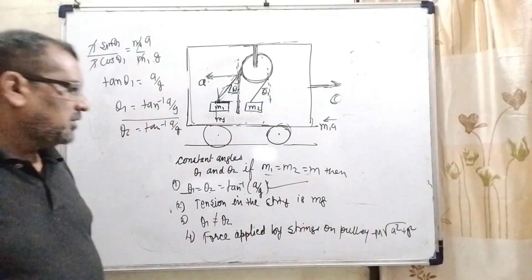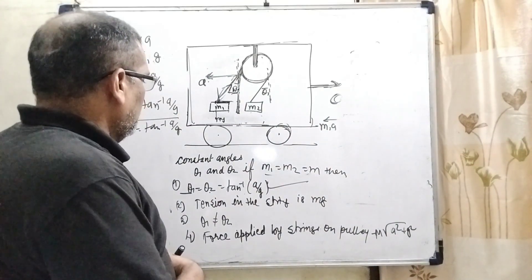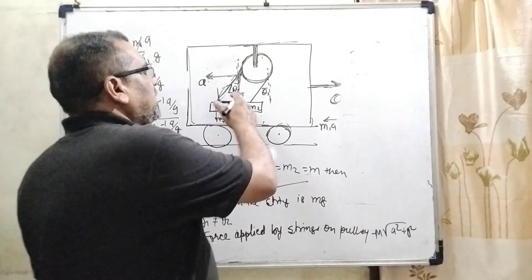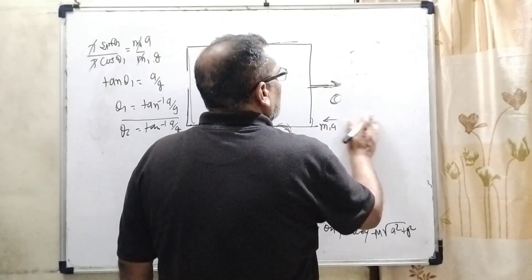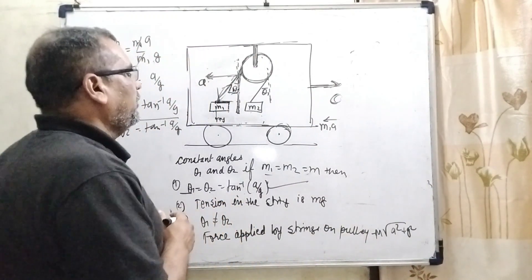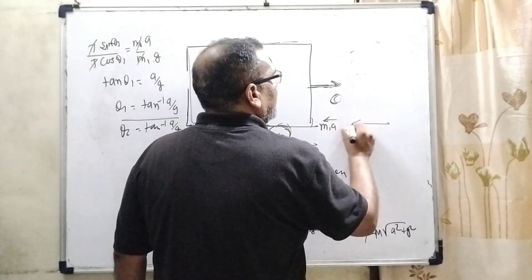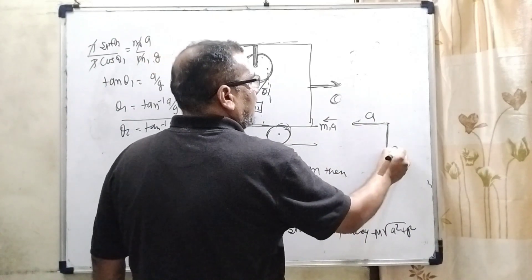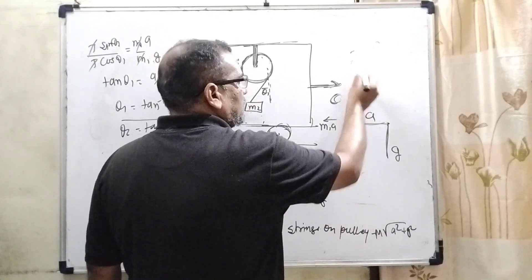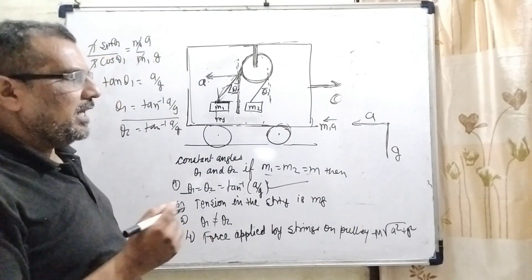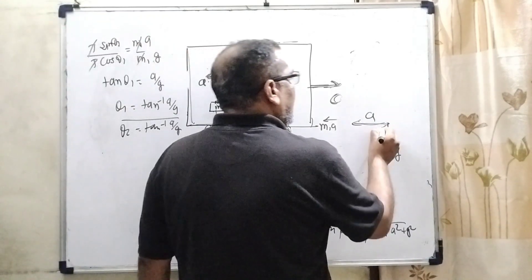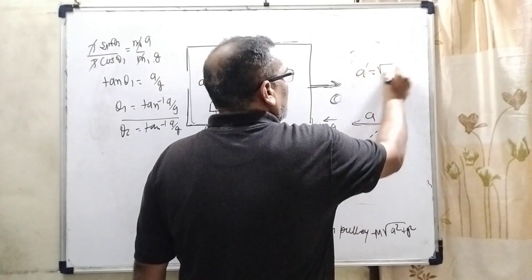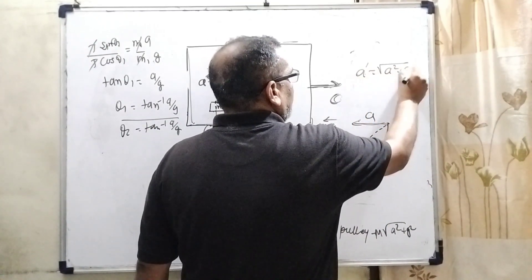Now for the force exerted on the pulley, we can see that pseudo acceleration is acting to the left side and g is acting in the downward direction. Since force is directly proportional to acceleration, the net acceleration acting on it, let us consider a dash, is a dash equal to root of a square plus g square.